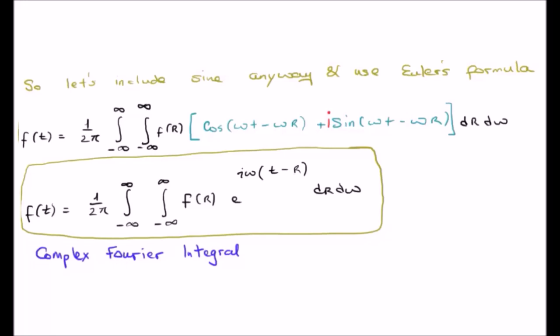Thereafter we convert this to a complex exponential. And hopefully now you can see why it's important to use the dummy variable.